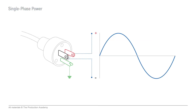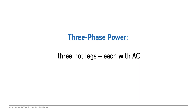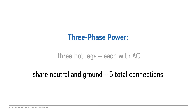Now with the 3 connections we discussed in the last video — hot, neutral, and ground — we can carry a single phase of alternating current. This can be represented as a sine wave, just like an audio signal. With 3-phase power, we actually have 3 separate hot connectors, which we also call legs, each of which has its own supply of alternating current. But they share the neutral and ground, so we end up with 5 total connections.